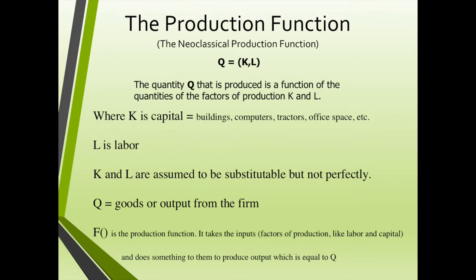Consider the standard neoclassical production function: Q = F(K, L), where capital K is capital — things like buildings, computers, tractors, office space, etc. — and capital L is labor. K and L are assumed to be substitutable, perhaps not perfectly. Capital Q is output — goods and services from a firm — and capital F is the production function that takes the inputs, the factors of production like labor and capital, and does something to them to produce output Q.